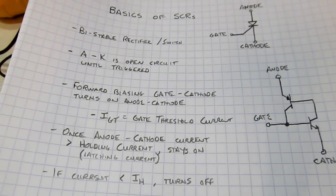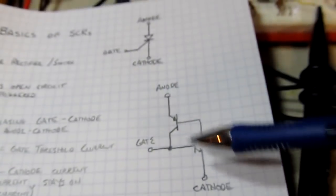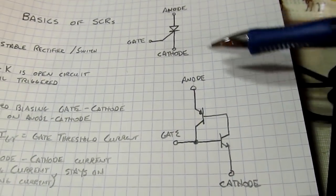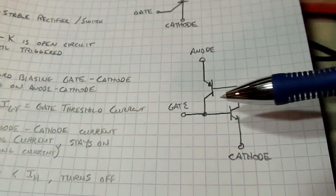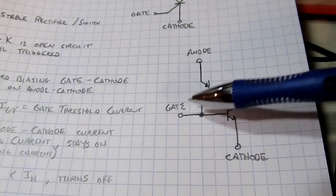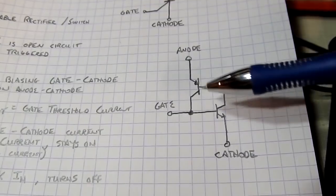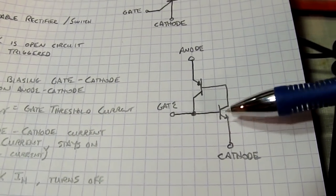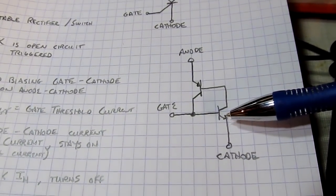Now, the way to understand the way an SCR works is you can kind of use this equivalent circuit. It's kind of like a four-layer device. If you think about this, if you just apply a voltage across anode-to-cathode with nothing at the gate, without anything at the gate, there was nothing to turn this transistor on in the first place.